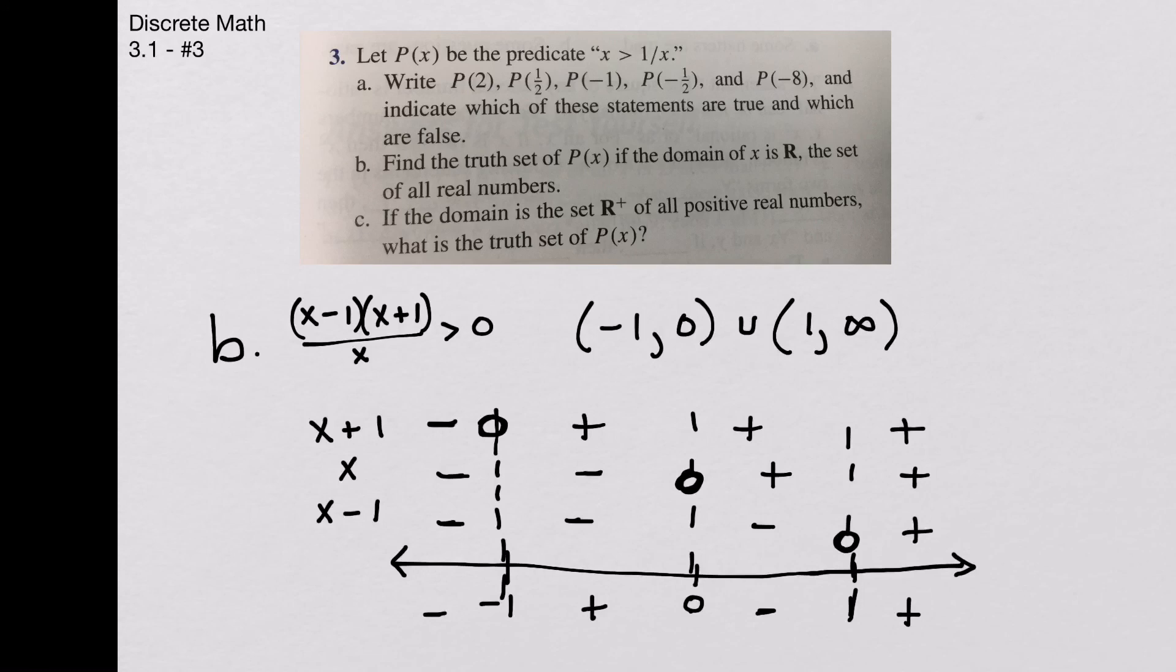Now I can also use this to solve part C. In part C, we're just limiting to this set of positive real numbers. So for part C, my solution is just 1 to infinity, because I can only use the part of the interval where my real numbers are positive. And that's the end of that problem.